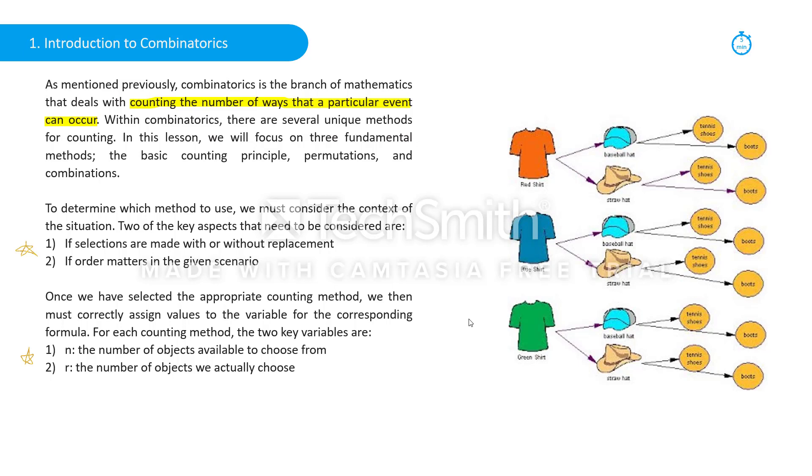So as mentioned before, the first thing we need to do is to determine which counting method the situation calls for. When looking at a problem, to determine the method we're going to use, we need to first of all look at if selections are made with or without replacement. With replacement, something can be chosen again, and without would be a choice that can only be chosen once. Secondly, we need to determine if order matters in a given scenario. Does choosing one thing before another matter or not?